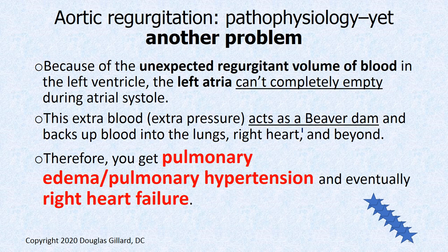There's another problem. Because of this unexpected volume in the left ventricle, during atrial systole the atrium can't completely empty. It still overstuffs the left ventricle but can't completely empty, so it acts as a beaver dam — you can't get the normal amount of blood out of your lungs. There's too much blood in the left atria, which increases pressure within the microcirculation of the lungs, leading to pulmonary edema. You might start oozing blood into the alveoli. The right heart backs up and tries to pump harder, eventually wrecking the right side of your heart — contributing to general cardiomyopathy.